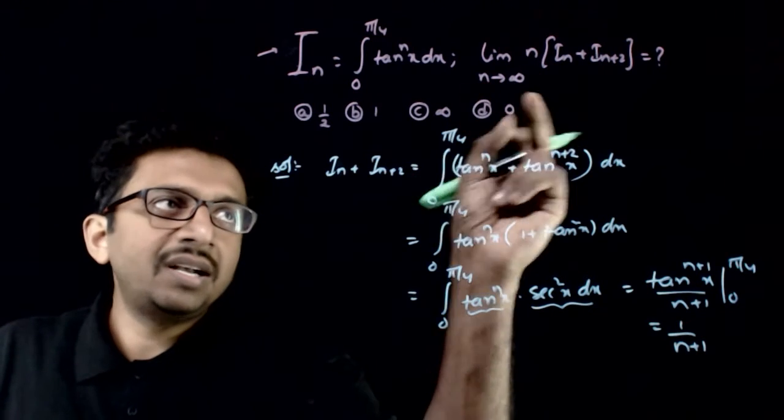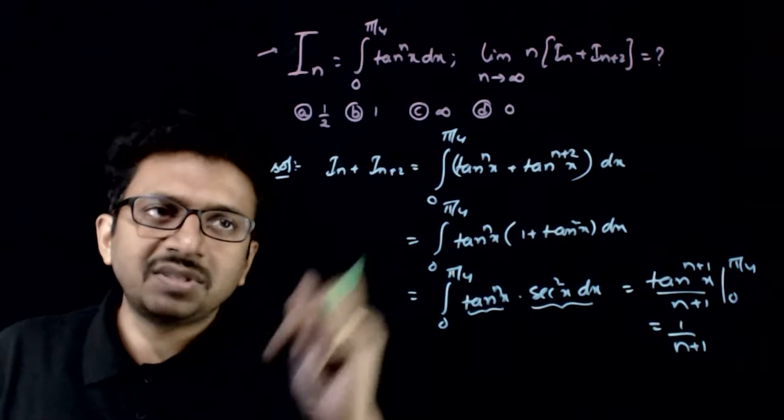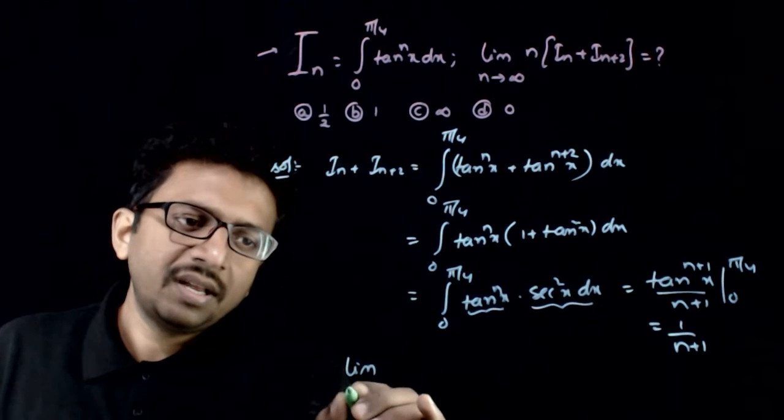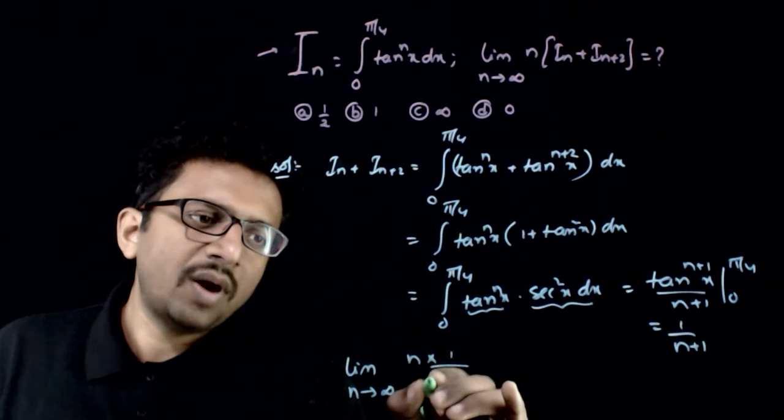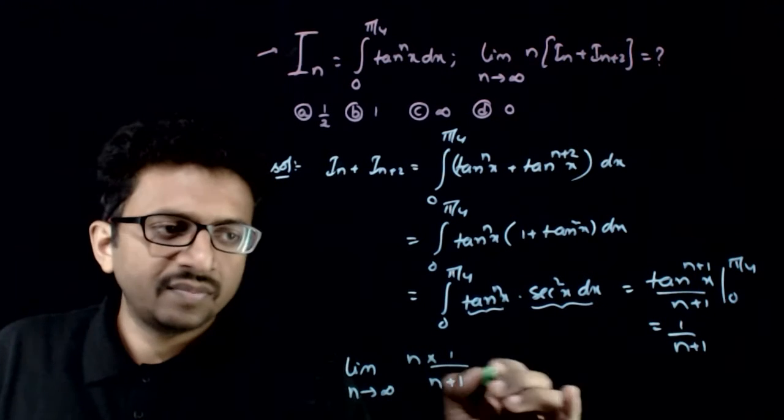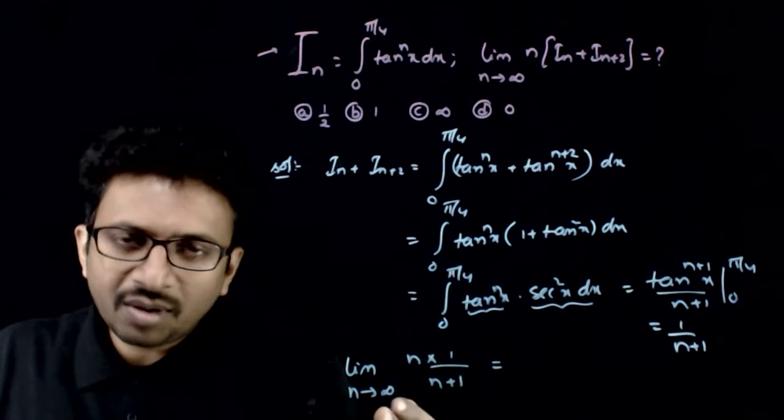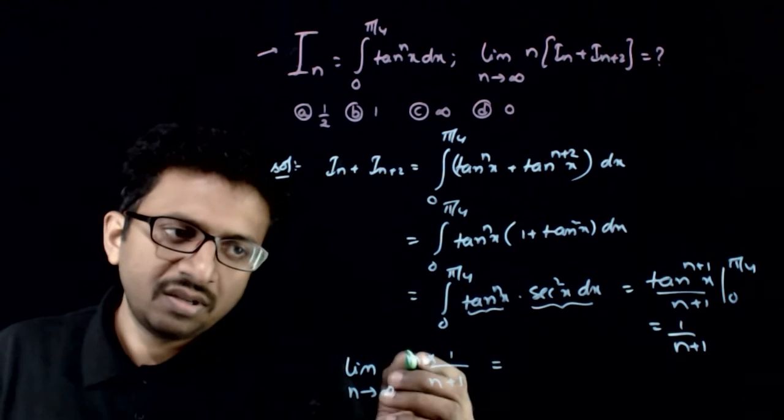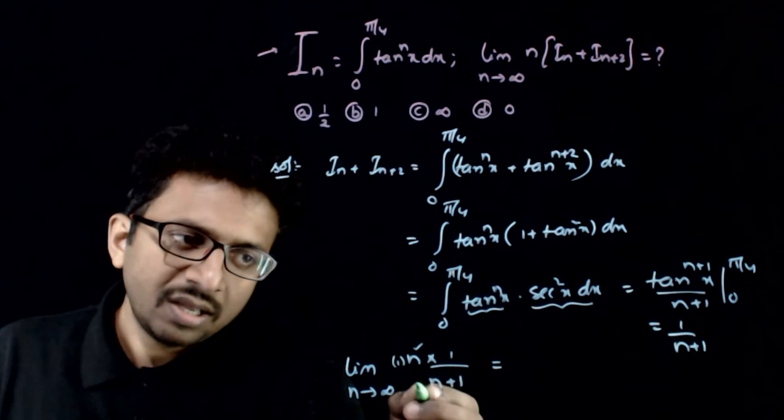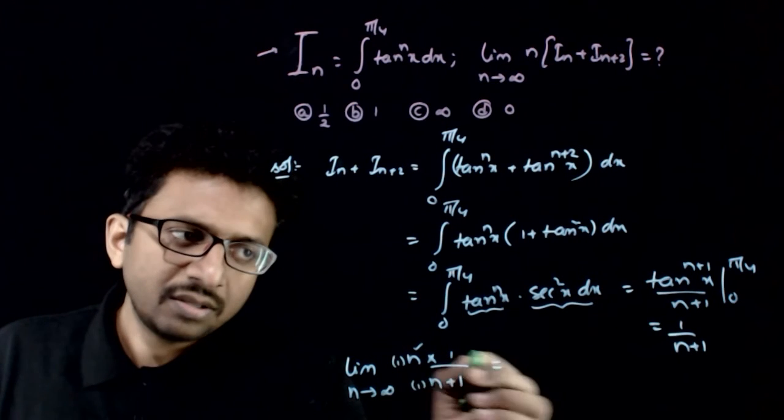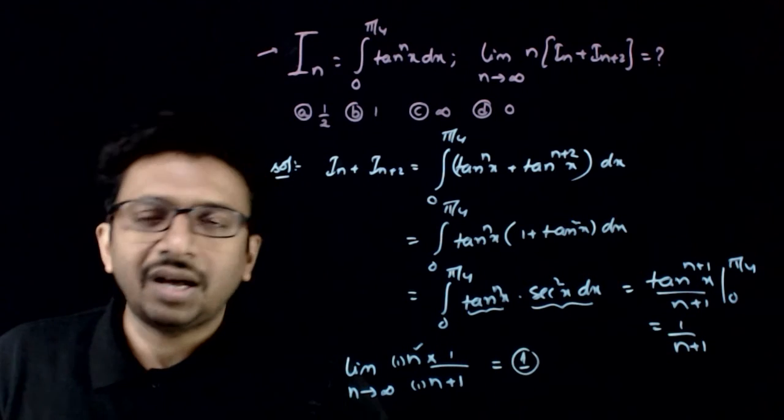Now you are asked to find the limit as n tends to infinity of n times this. So the limit as n tends to infinity of n times 1 by n plus 1 is the limit of n by n plus 1. The coefficient of n is 1 in both numerator and denominator, so you get 1 as the answer.